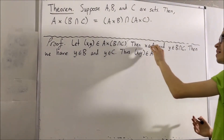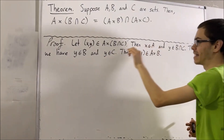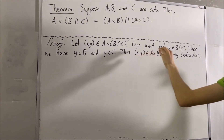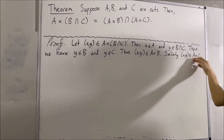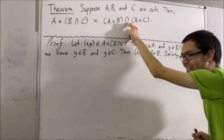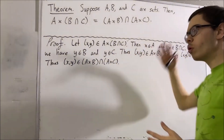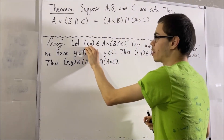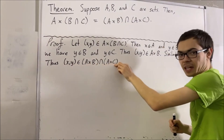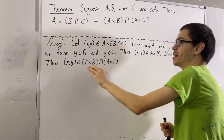And similarly, because X is an element of A and Y is an element of C, we can say that the ordered pair X comma Y is an element of A times C. Now notice, X comma Y is an element of A times B and A times C. So we can say that X comma Y is an element of A times B and A times C. Because that element was arbitrary, we now have that everything in this set is also in this set.